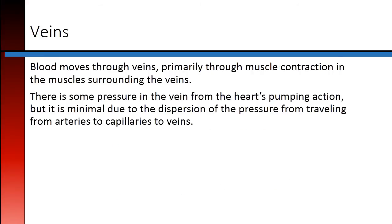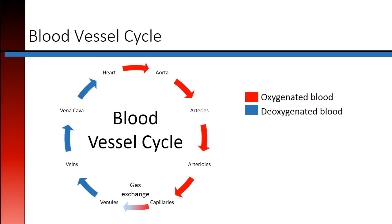Blood moves through veins primarily through muscle contractions in the muscles surrounding the veins. There is some pressure in the vein from the heart's pumping action, but it is minimal due to the dispersion of pressure from traveling from the arteries to the capillaries and then to the veins. This graphic indicates the blood vessel cycle starting with the heart. Blood progresses from the heart through the aorta into arteries and then arterioles, which become capillaries where gas exchange takes place. Those capillaries join together to become venules, which create larger veins, which empty into the vena cava and return the blood back to the heart to be sent to the lungs for reoxygenation.